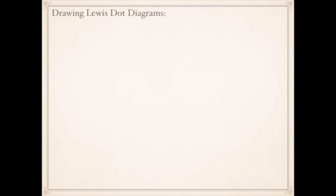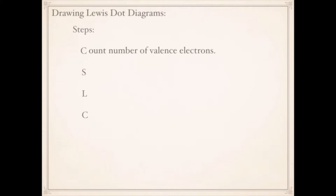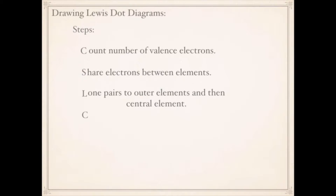In this video you're going to learn how to create Lewis dot diagrams. There are specific steps you need to take, and the steps are CSLC. C stands for count the number of valence electrons. Next, you're going to share electrons between elements. Then you're going to add lone pairs to the outer elements and then to the central element. Finally, you count the number of electrons used, and that needs to match the number of valence electrons. If it doesn't, then we have to problem solve.